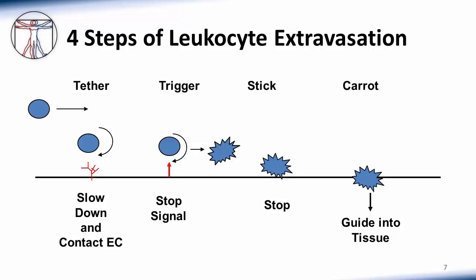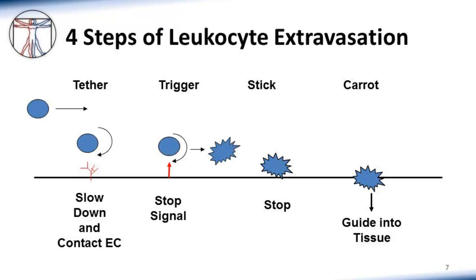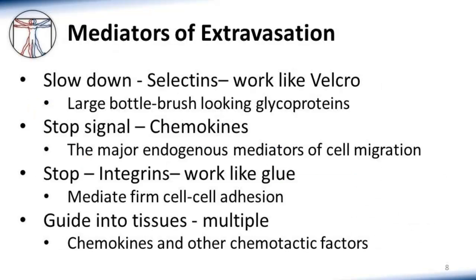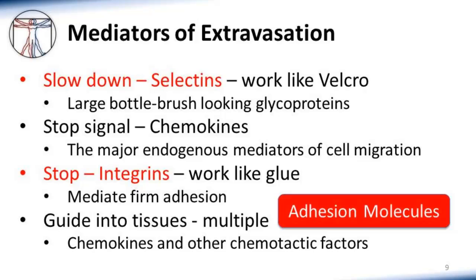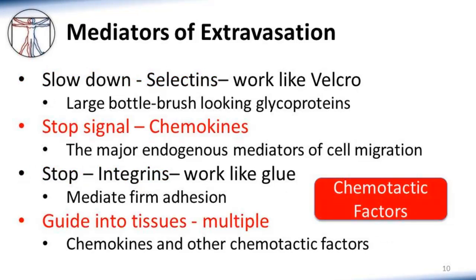The signal to slow down is provided by selectins. These work much like Velcro and are large bottle-brush-looking glycoproteins. The stop signal is provided by chemokines, which are the major endogenous mediators of cell migration. Stopping the cells requires integrins, which work like glue to mediate firm cell-cell adhesion. And finally, cells are guided into tissues using multiple chemokines and other chemotactic factors. Note that the two steps involving cell adhesion are mediated by adhesion molecules, while the other two steps involve chemotactic factors.